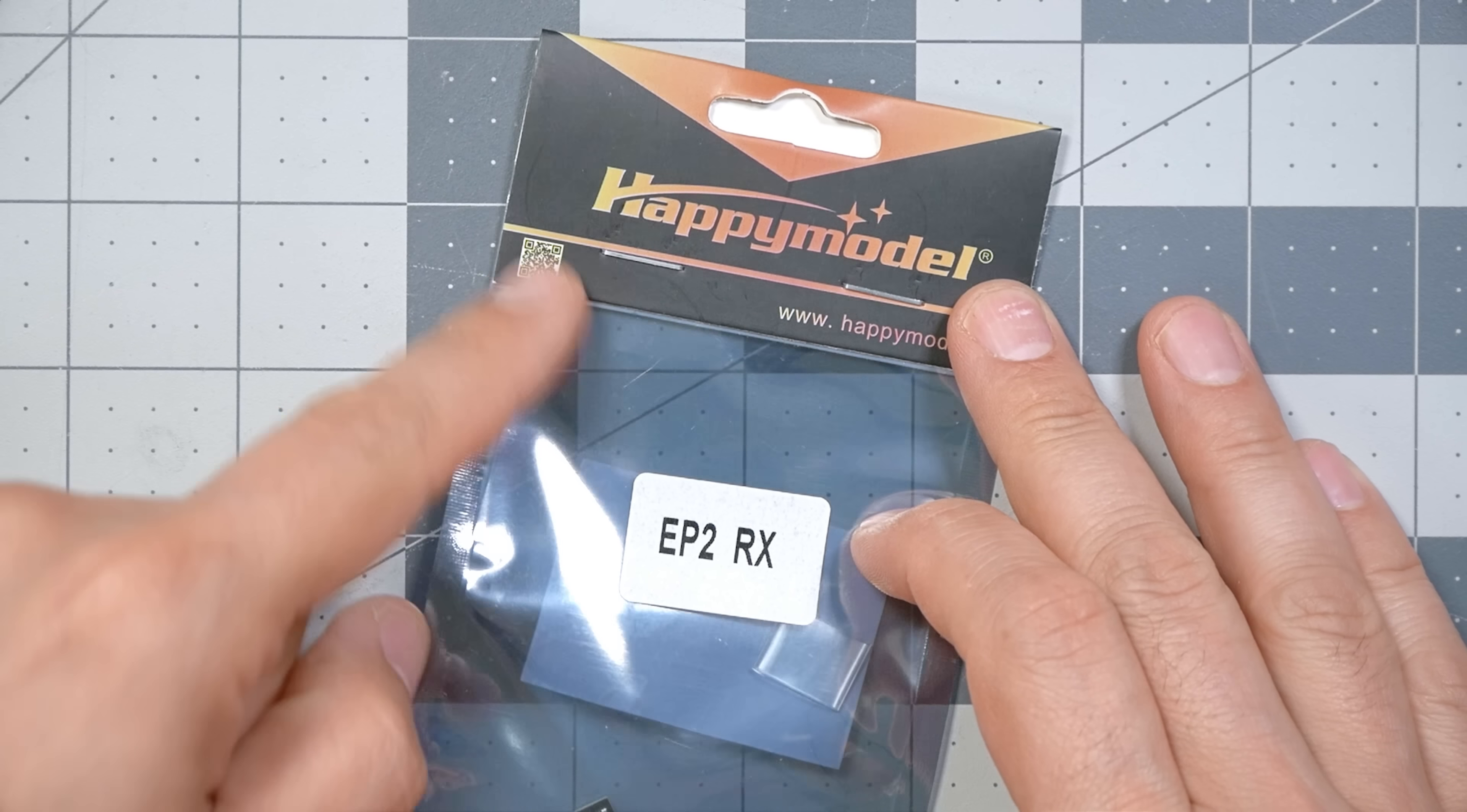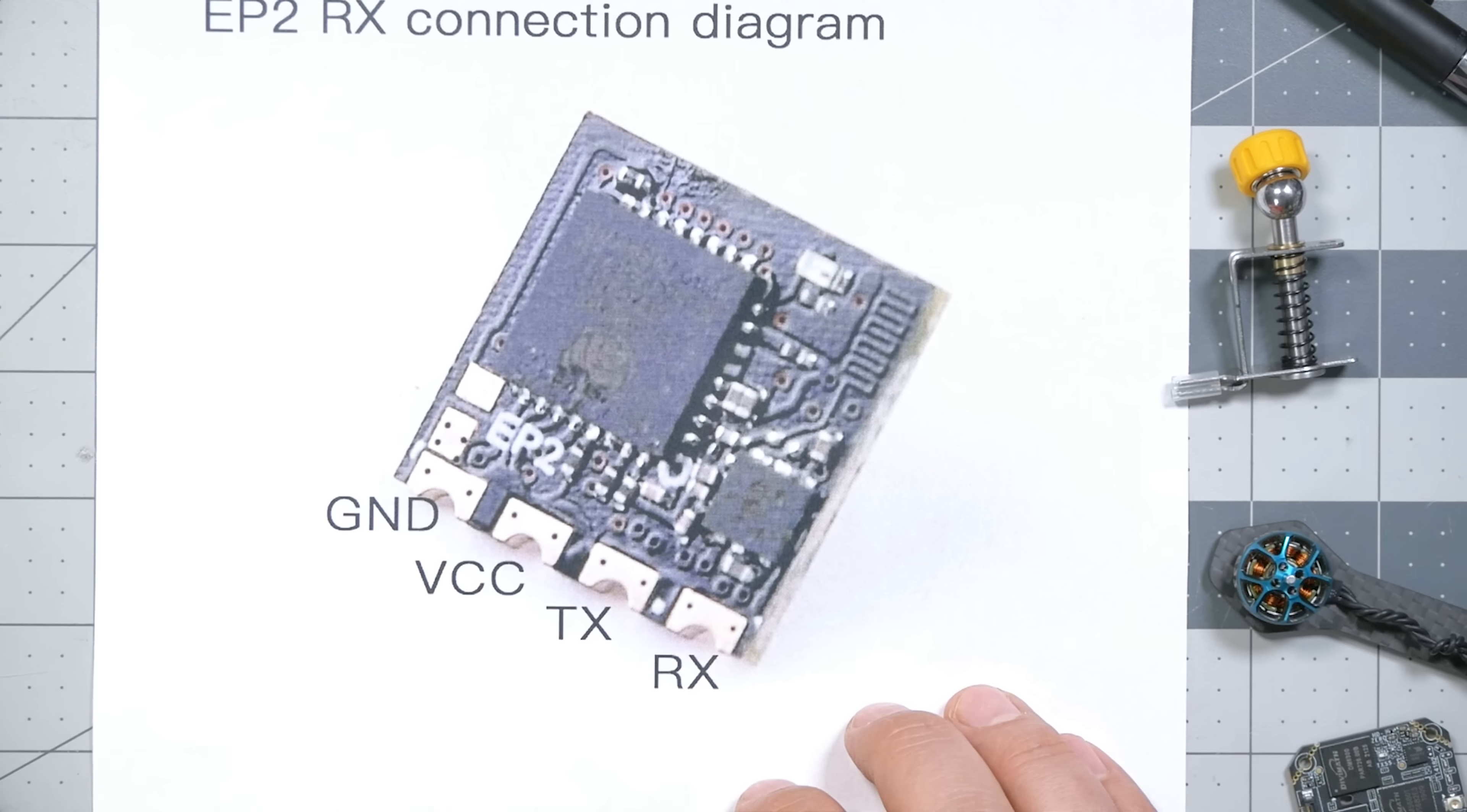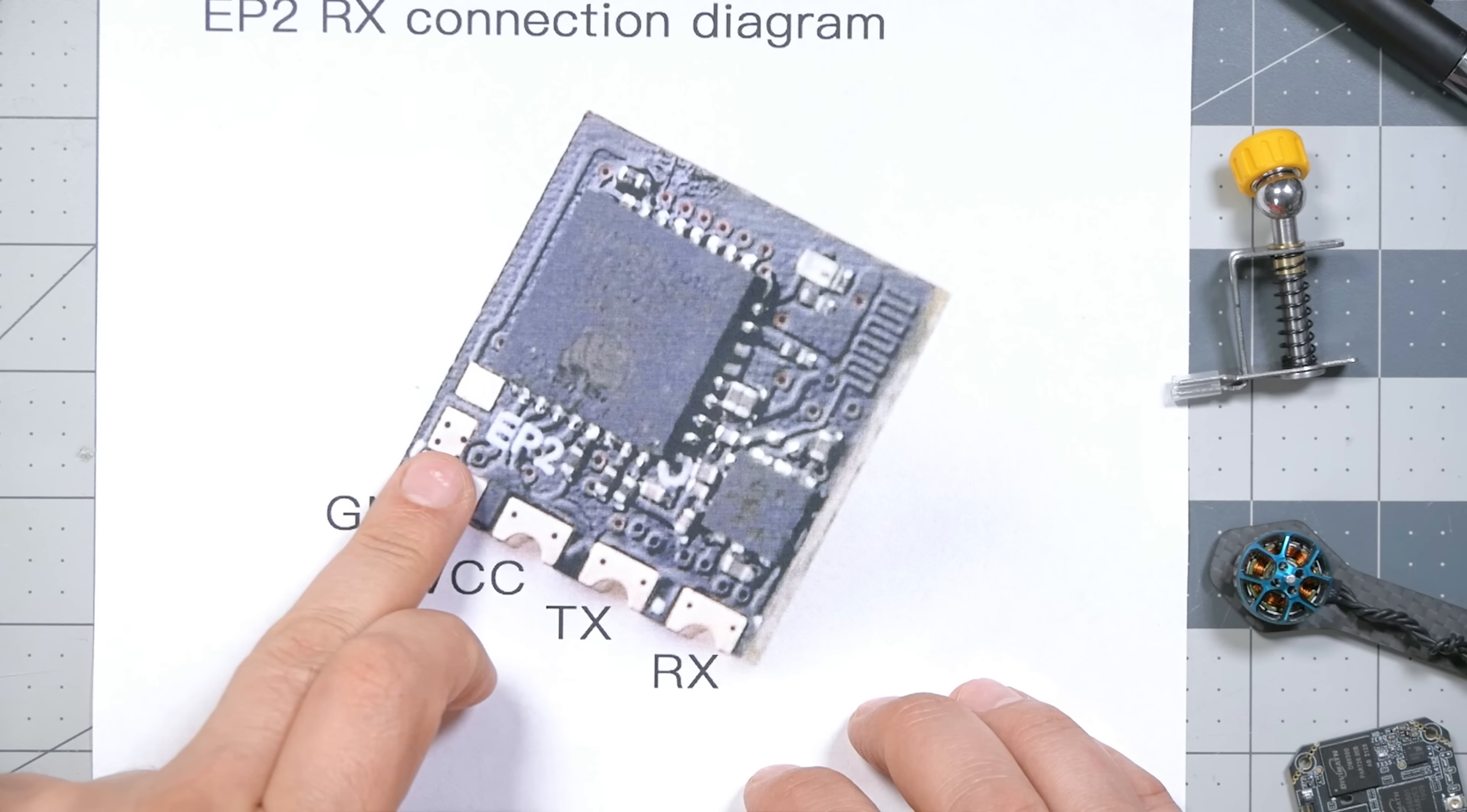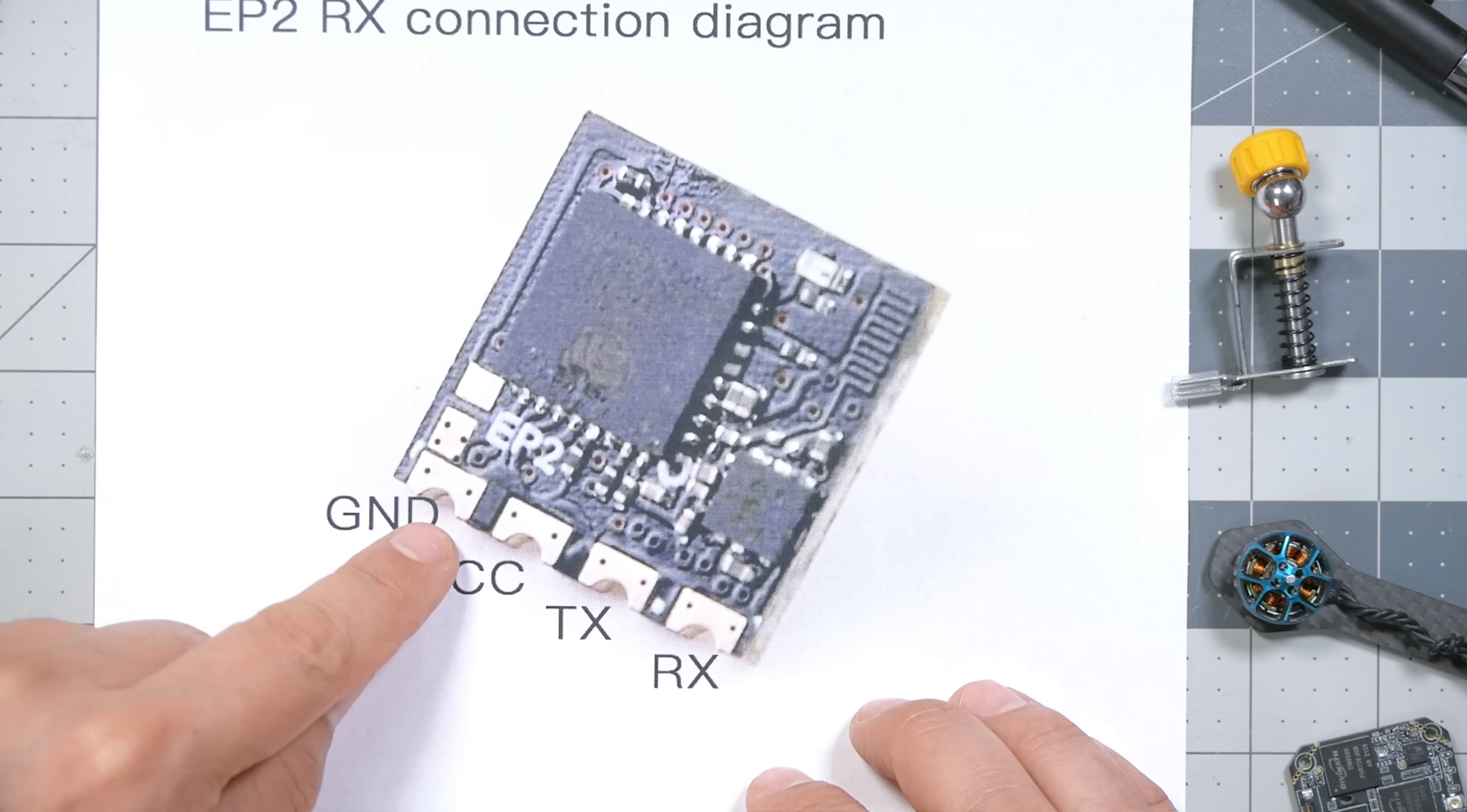For receiver, I'm going to be using the Happy Model ExpressLRS EP2 receiver. And if you're not up to date on ExpressLRS, this is why it is perfect for a tiny little build like this. Because that is a whole damn receiver, including the antenna. And the pinout for this receiver is the same as a Crossfire receiver: Ground, 5V, TX, RX. And make note that you are looking at this from the side of the receiver that doesn't have the antenna on it. And I always just look for this big thick pad here, and I know that that's where ground is. And then I work my way over: Ground, 5V, TX, RX.